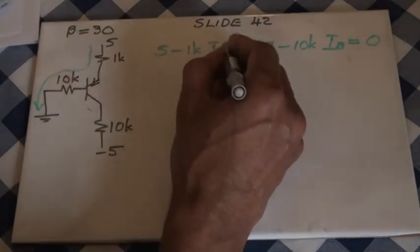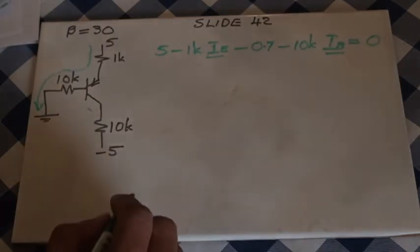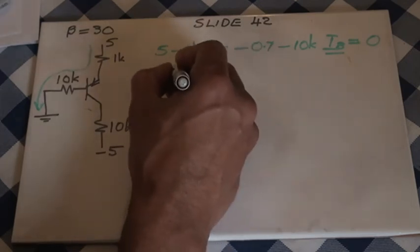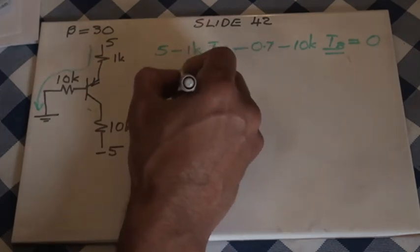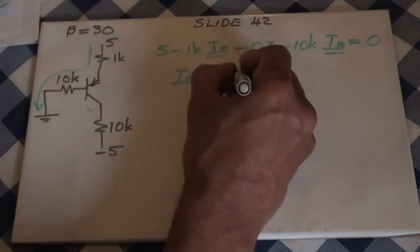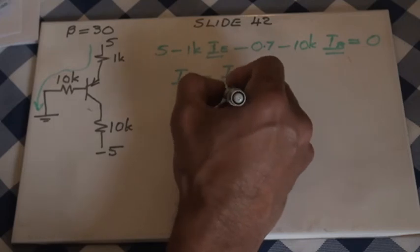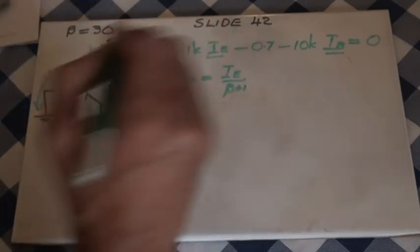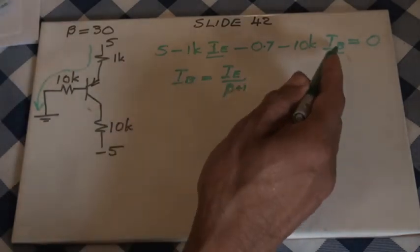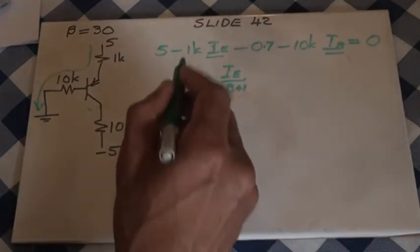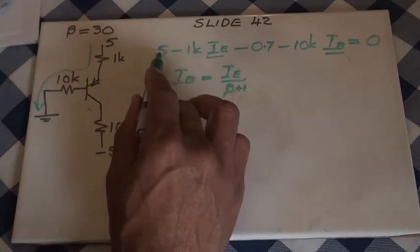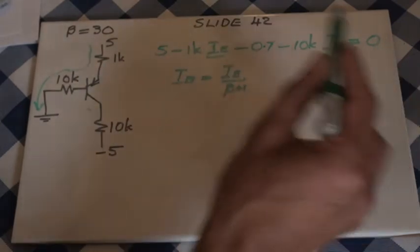IB equals IE divided by beta plus 1. Using this expression, we are going to replace IB, and in the meantime we will keep two voltages on one side and move everything else to the other side.